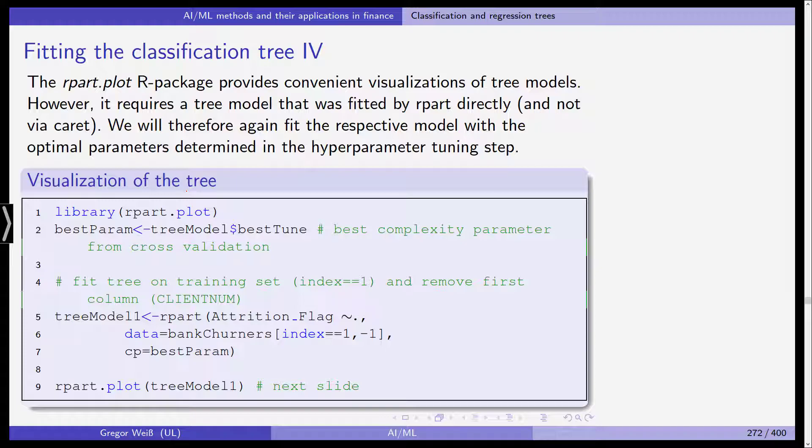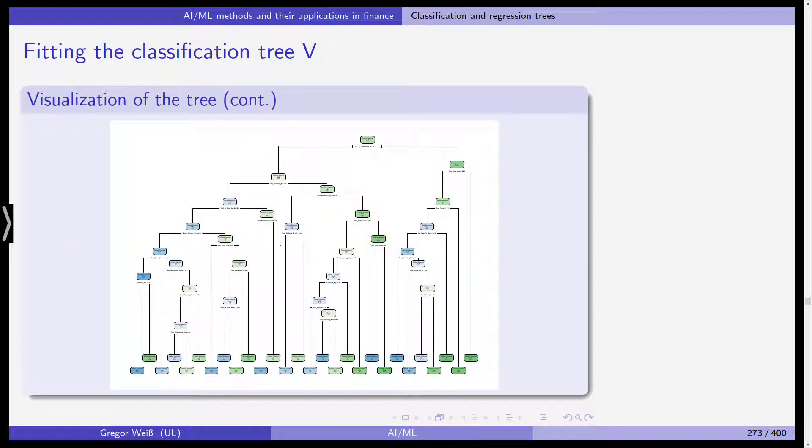The rpart.plot R package provides quite a convenient visualization of tree models. However, it requires a tree model that was fitted by rpart directly and not in the caret package. Therefore, we again fit the same model using just a different package in R and with the optimal parameters determined in the hyperparameter tuning step. We basically get the same model just with a different package, but in this package we are able to do some nice plots in R. We visualize this best param tree model. We need rpart.plot as the package and then we can plot it.